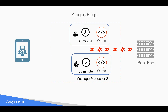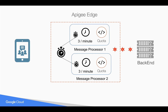We can solve this problem by having a central counter that counts the number of requests going through Apigee Edge, and which synchronously sends that data to each message processor so that each message processor knows what the available count is and how much has already been used. To do this, we need to set the distributed and synchronous elements in the XML policy.